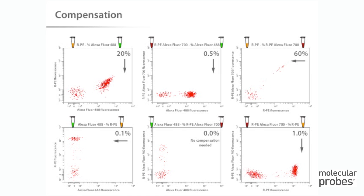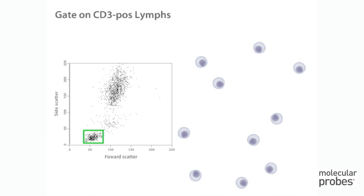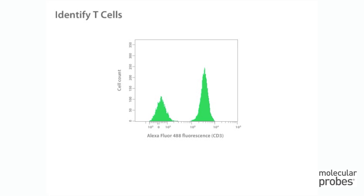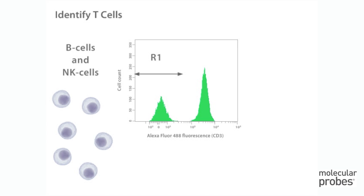All the other emission signals that show spectral overlap must be corrected in the same way. After setting compensation, we want to identify T cells from within the lymphocyte gate. One of the probes we use in our experiment — an Alexa Fluor 488 anti-CD3 antibody — is a specific marker for T cells. To see how many cells within the lymphocyte population have the CD3 cell surface antigen, we first create a log scale histogram of Alexa Fluor 488 fluorescence. Next, we will define regions to capture both visible populations: Region 1 (R1) has been set on the CD3 negative peak, which includes primarily B cells and natural killer cells. Region 2 (R2) has been set on the CD3 positive peak — these are the T cells of interest.